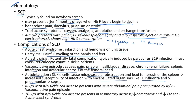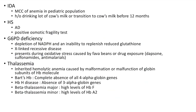Sickle cell clinical cases: 8-year-old with sickle cell disease presents with severe abdominal pain precipitated by nausea and vomiting — vaso-occlusive pain episode. 10-year-old with sickle cell disease presents in respiratory distress with reduced hematocrit and decreased oxygen saturation — acute chest syndrome.